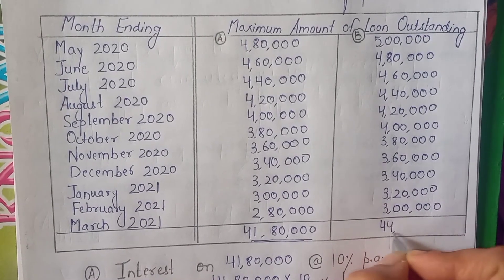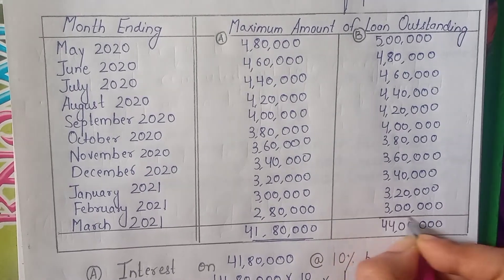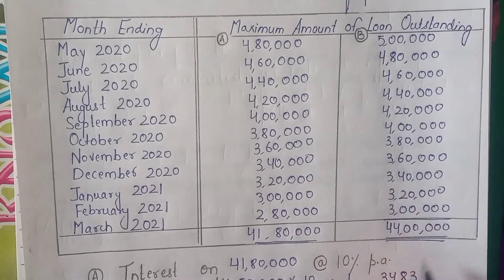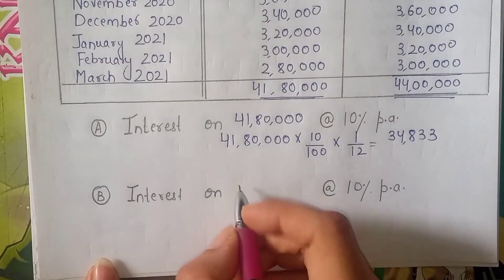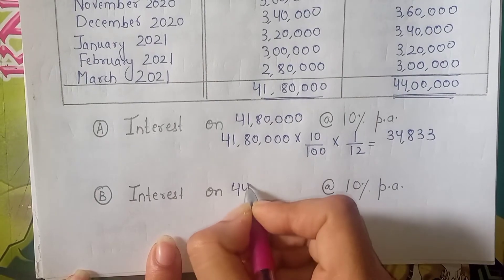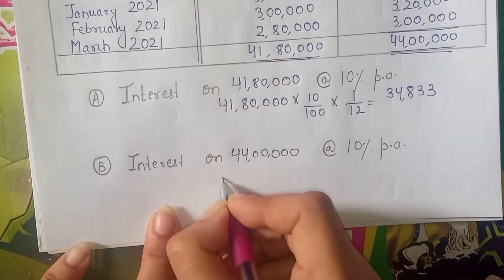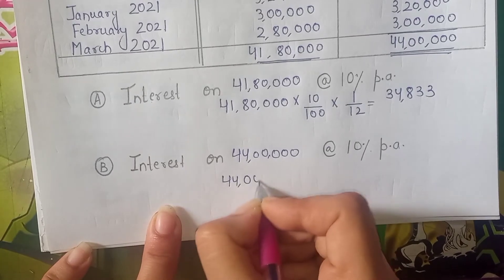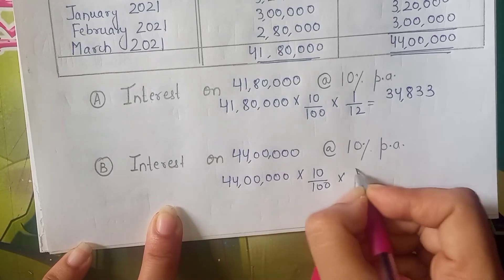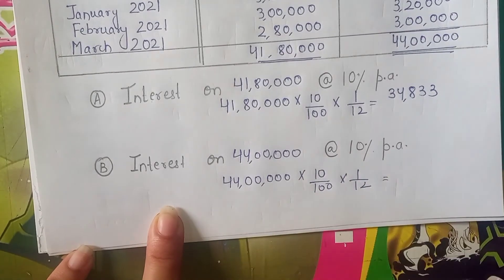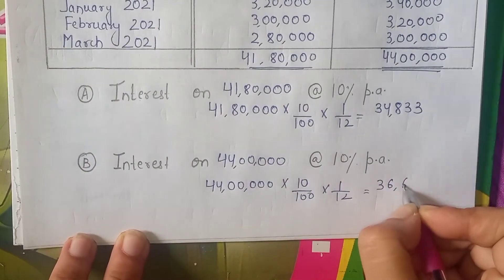The total aggregate outstanding balance for situation B is ₹44,00,000. The perquisite value is ₹44,00,000 × 10% × 1/12, which equals ₹36,667.